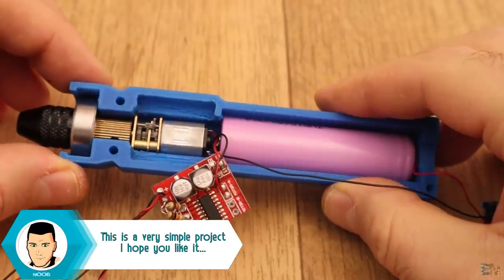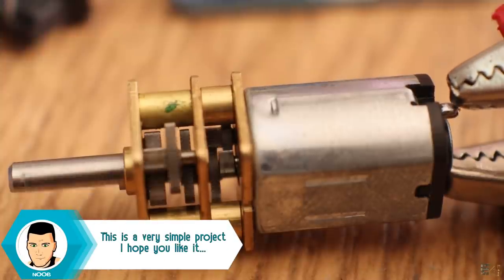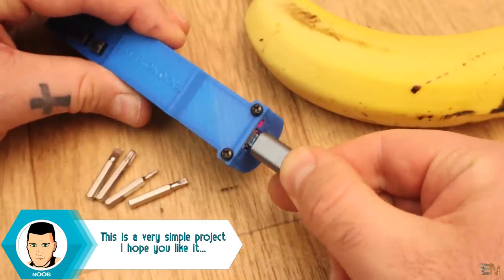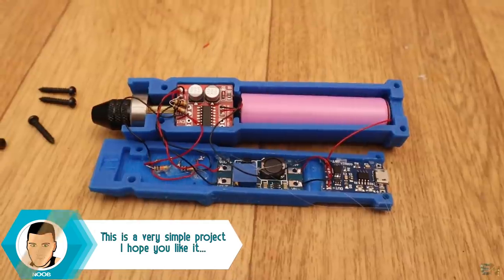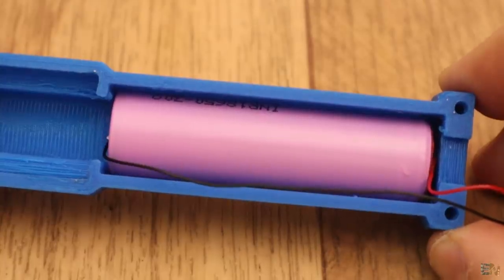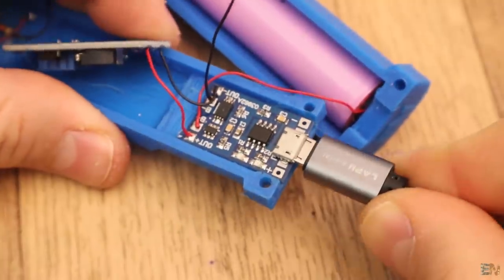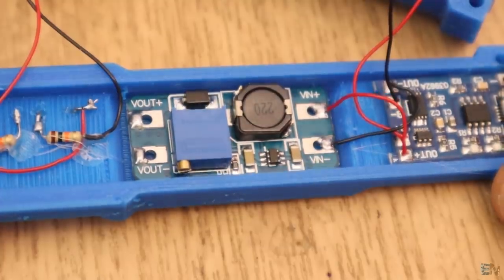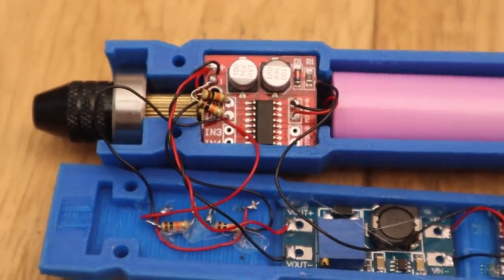It uses a geared motor so we have decent torque. It can be recharged using a USB cable and is powered by a lithium-ion battery. Inside we have that battery, a USB charging module, a boost converter, and an H-bridge module so we could spin both clockwise and counterclockwise.